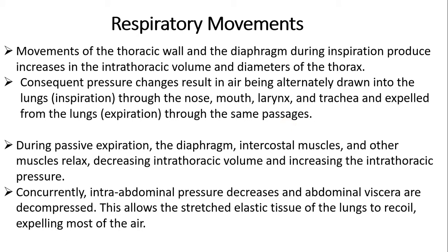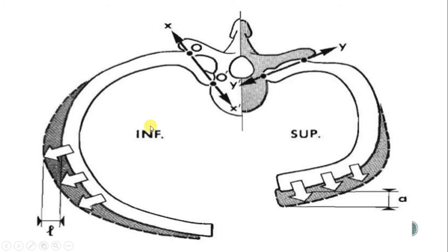Before we start the respiratory movements, the axis of movement — shown in the previous slide — passes through the costotransverse joint and costovertebral joint. It is the tubercle joint with the transverse process of the vertebra and the tubercle of the rib, and the joint between the head of the rib and the facet over the vertebra. Around this axis, two movements are offered: one that will increase the transverse diameter, and one anteroposterior movement which will increase the anteroposterior diameter.